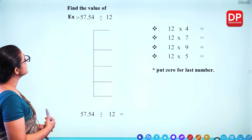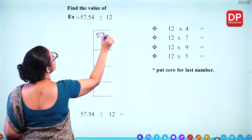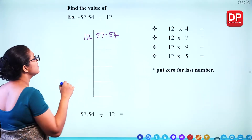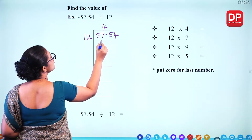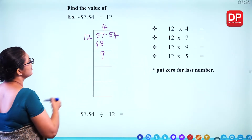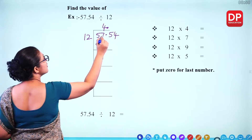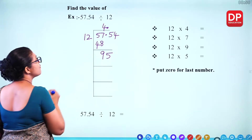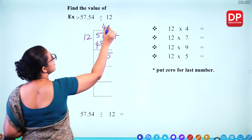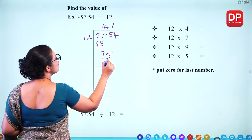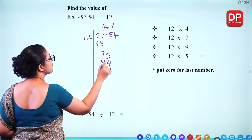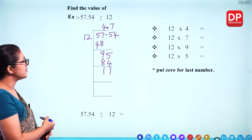Find the value of 57.54 divided by 12. How many 12s for 57? That is 4 — 4 times 12 is 48, remainder 9. Keep the decimal point aligned. For 95, how many 12s? 7 — 7 times 12 is 84, remainder 11. Take 4: for 114, how many 12s? 9 — 9 times 12 is 108, remainder 6. Take a zero: for 60, 12 times 5 is 60, remainder 0. So the answer is 4.795.